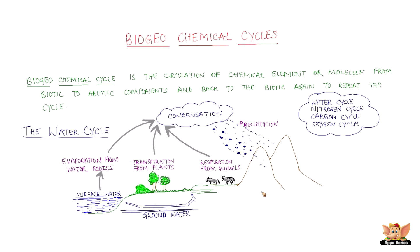Why is this cycle important? It is in this cycle that terrestrial organisms use water for various life processes, and importantly, the water enriches itself with lots of soluble minerals which are used by both land as well as marine organisms.